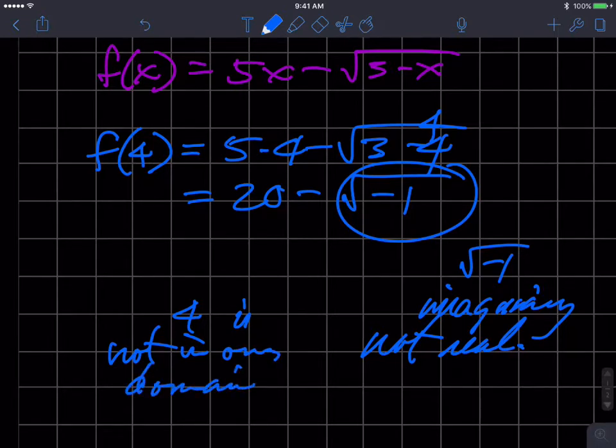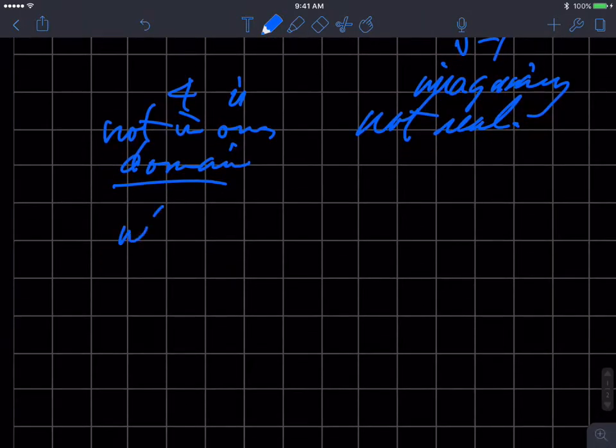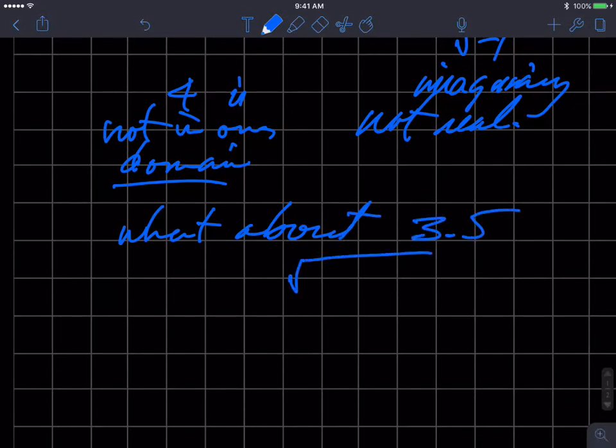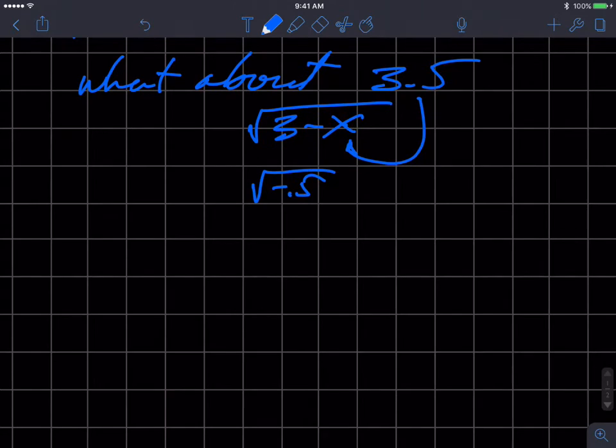And so 4 should not be part of our domain, is not in our domain. And even though you weren't told that, we can sort that out. So the function implies to us that 4 is not part of our domain. What about 3.5? Well if we just look at this little part here, 3 minus x, if I put a number in here like 3.5, I'm going to get a negative number, right? So what can't x be?